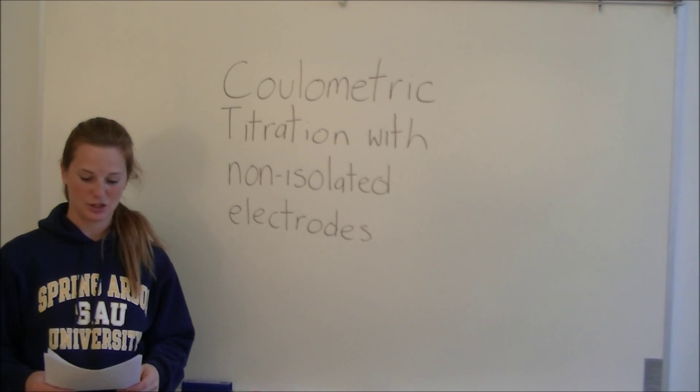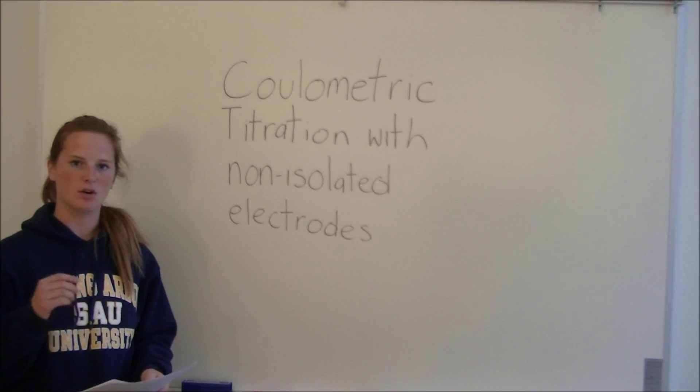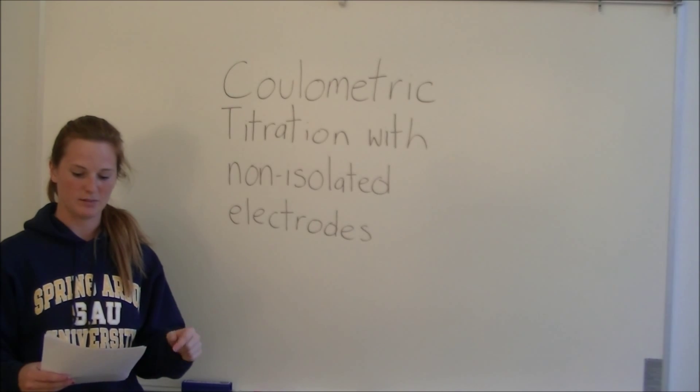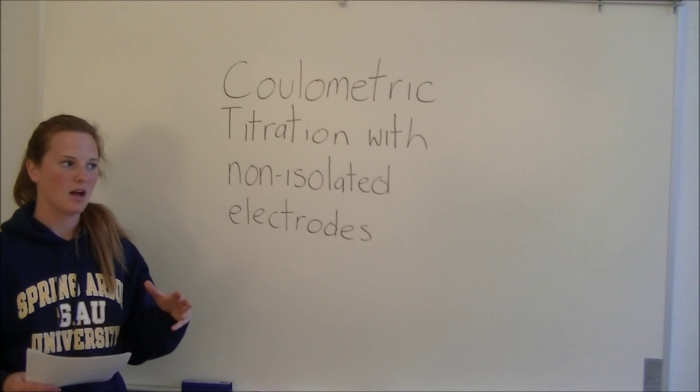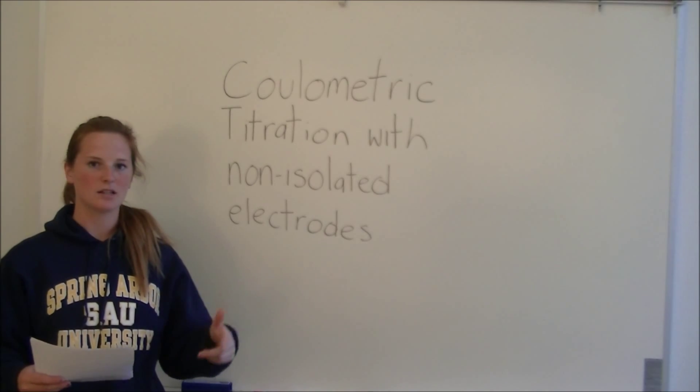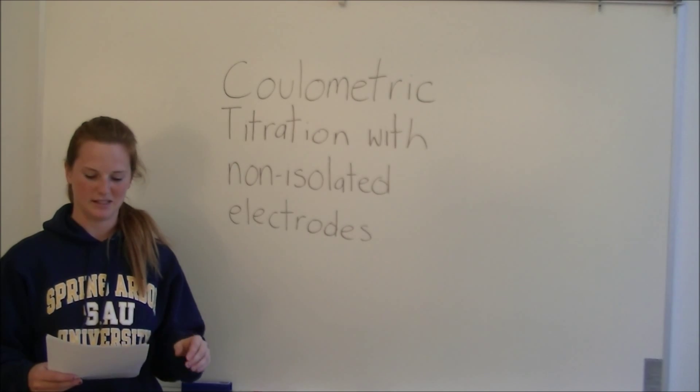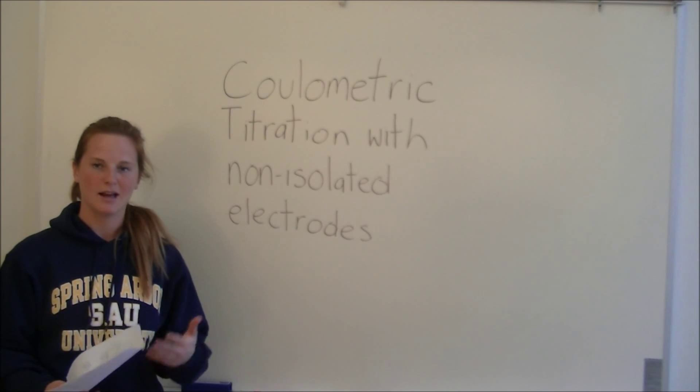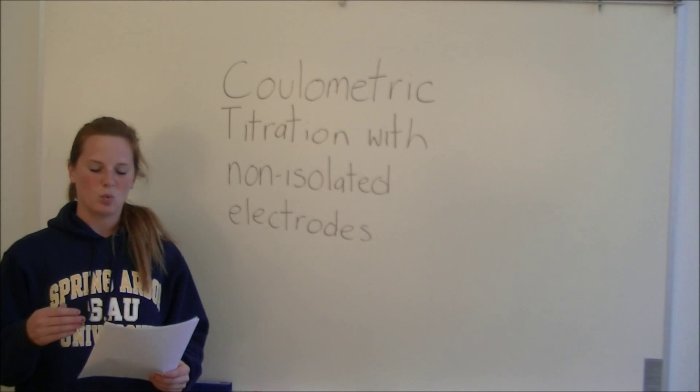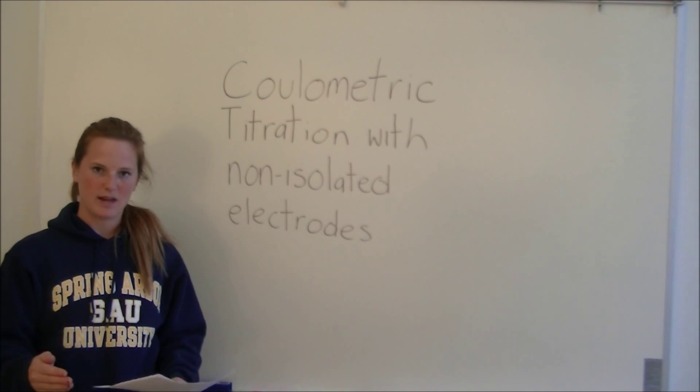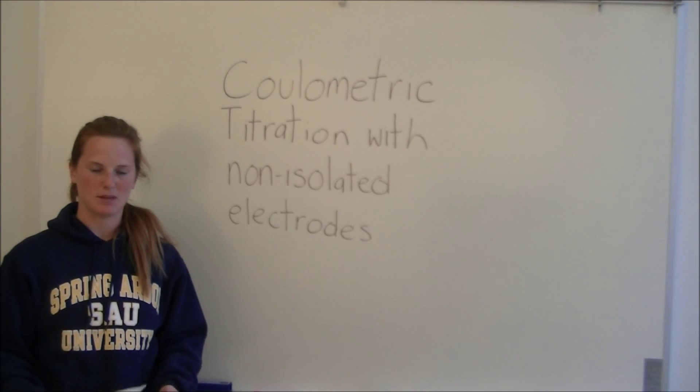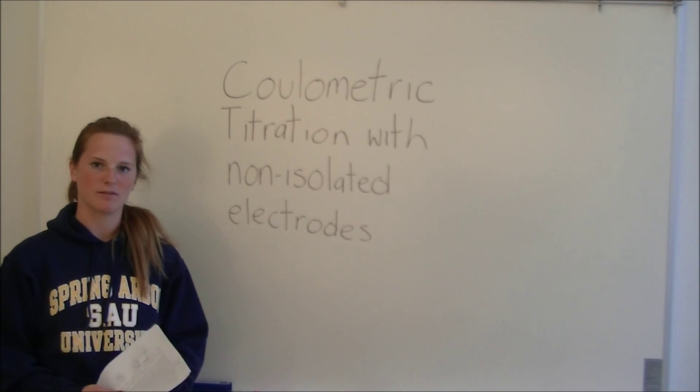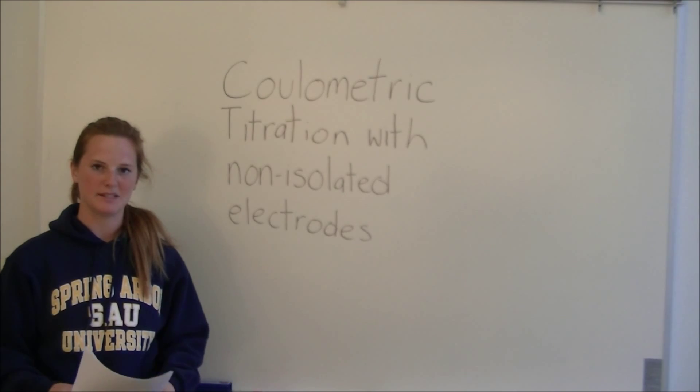It's a procedure where a known amount of current is applied to a solution with an unknown species in it. That current is going to oxidize or reduce that unknown species until all of it is in a different state. We're going to use the magnitude of that current and the duration that it was applied to find out the number of moles or the concentration of that unknown species.